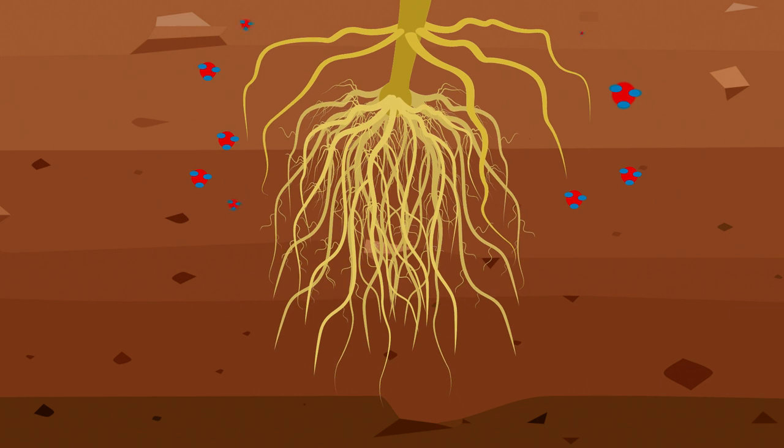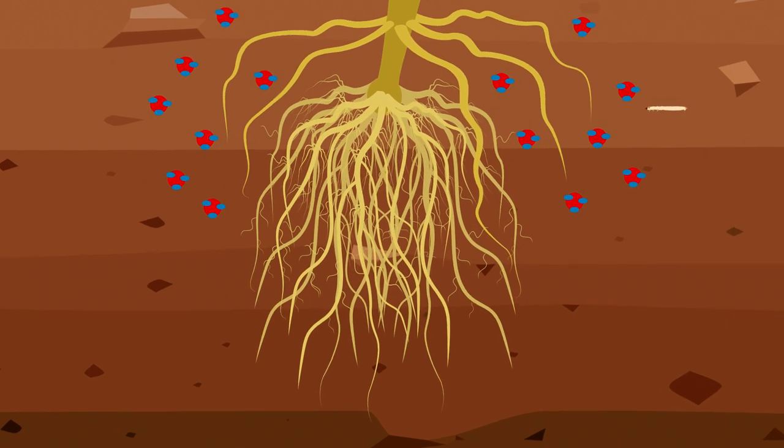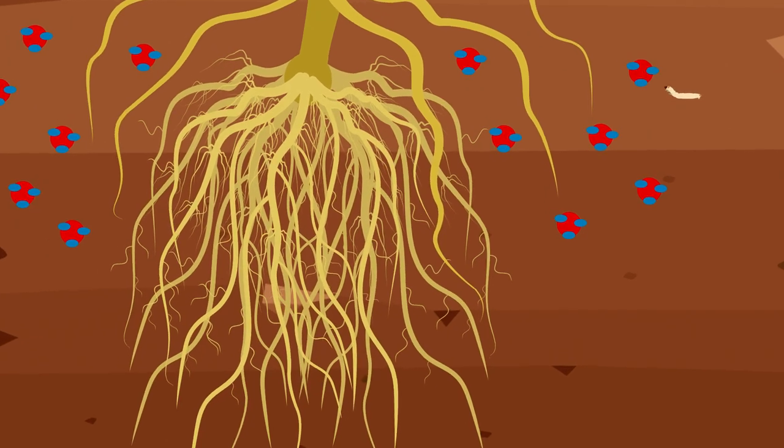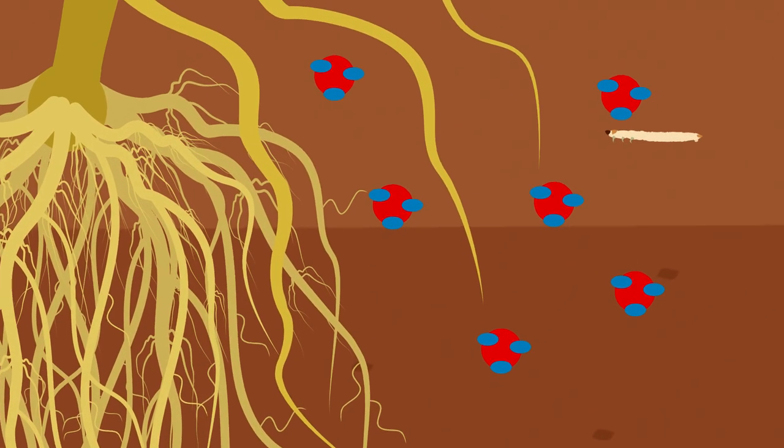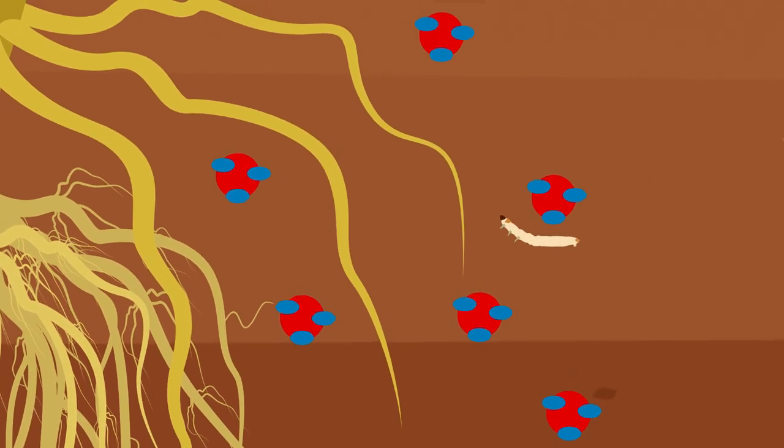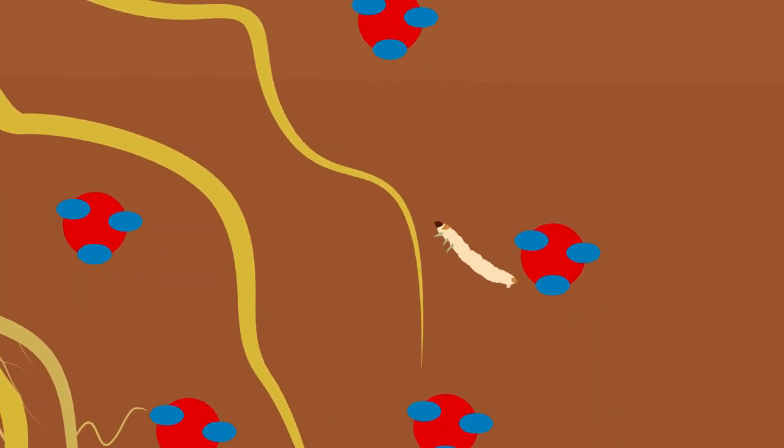Now comes the trick. The rootworm larvae are able to specifically detect these iron complexes. They follow the complexes to first find the maize plants and then the nutritious crown roots. The larvae then feed on the crown roots.